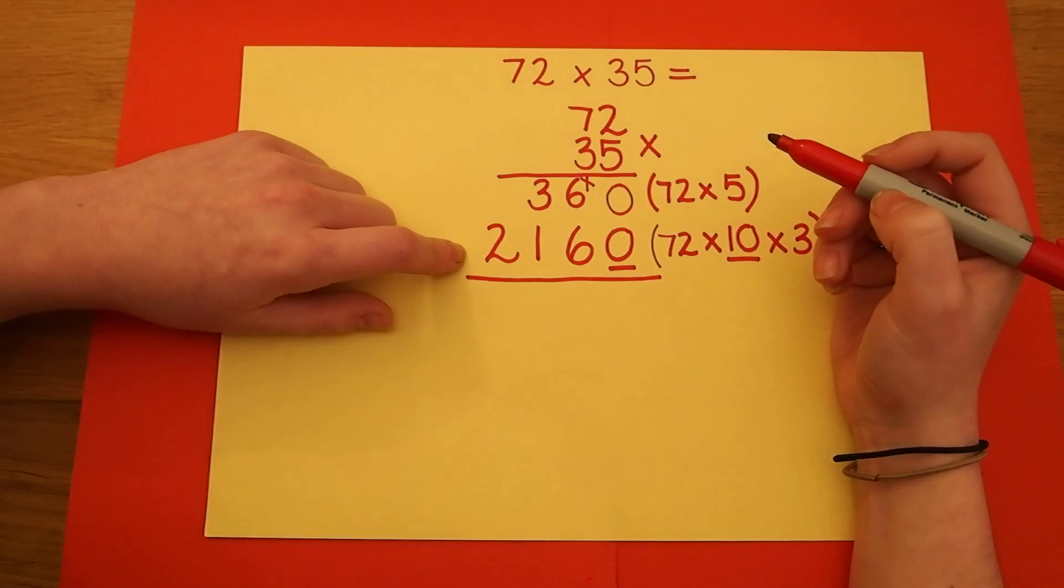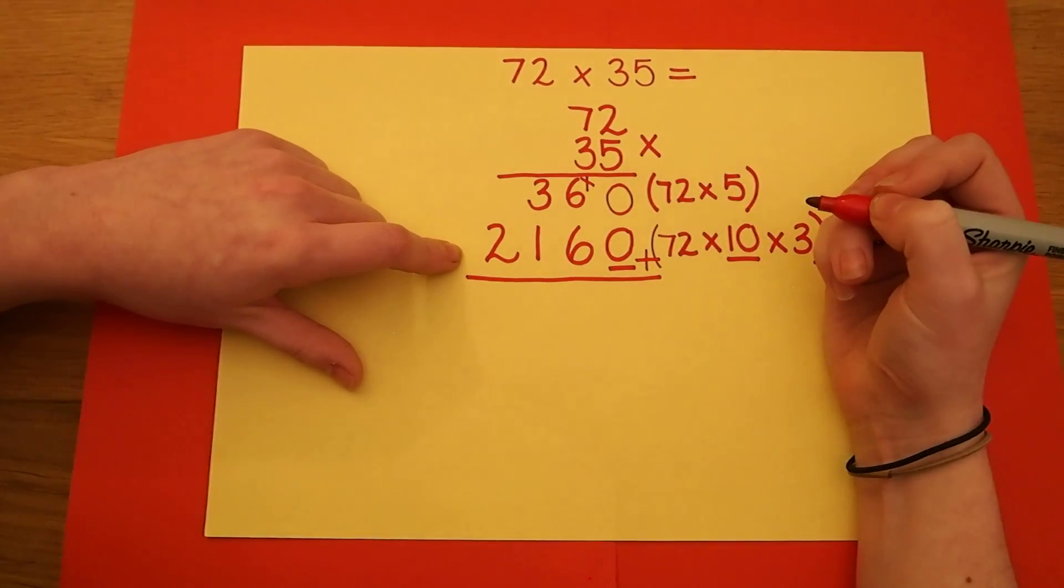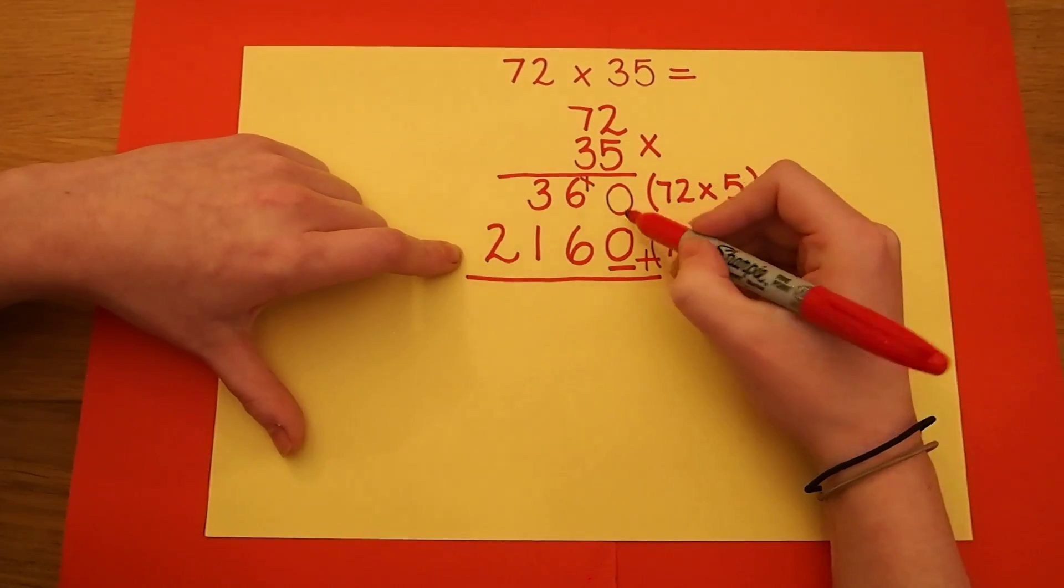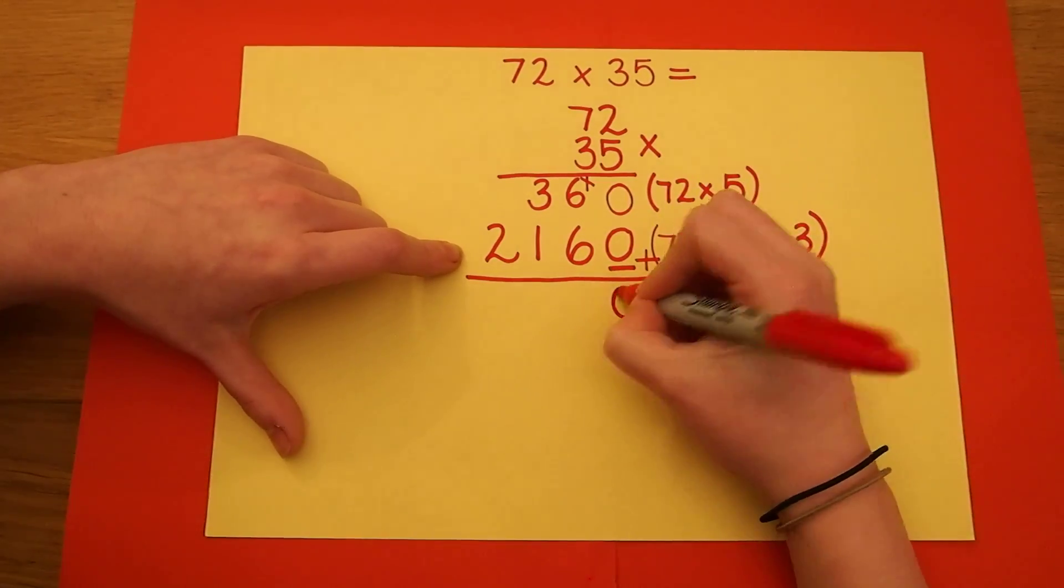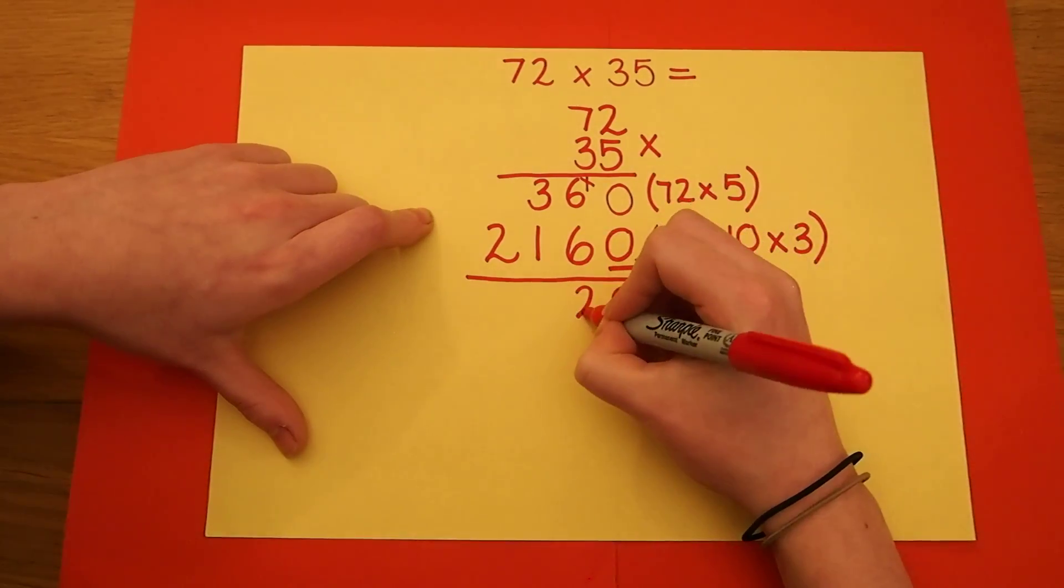To finish off the long multiplication method I need to add my two answers together. 0 add 0 is 0. 6 add 6 is 12.